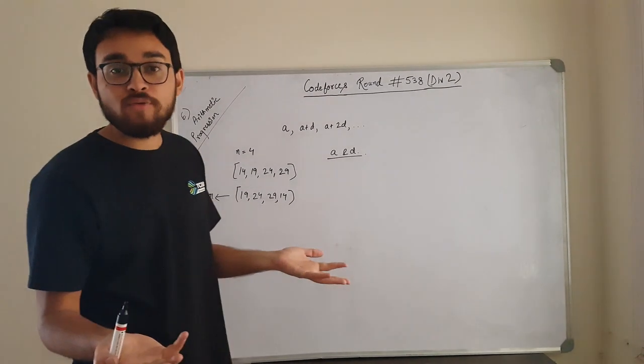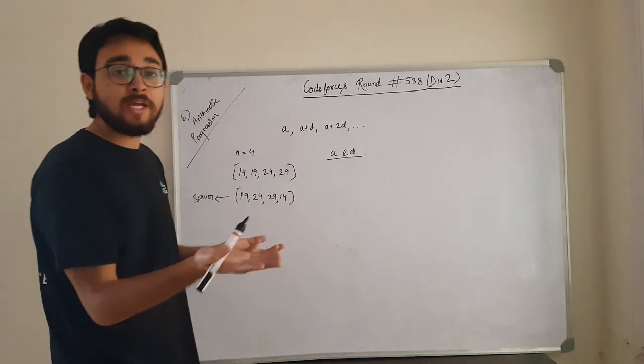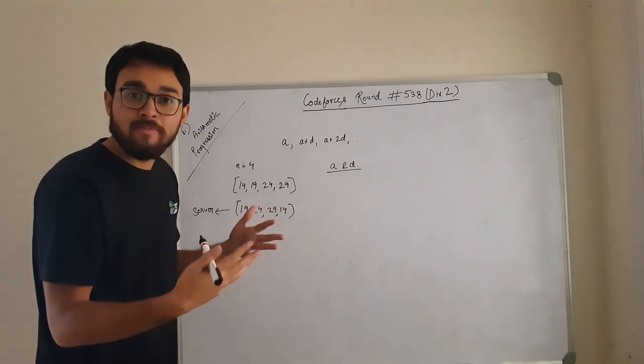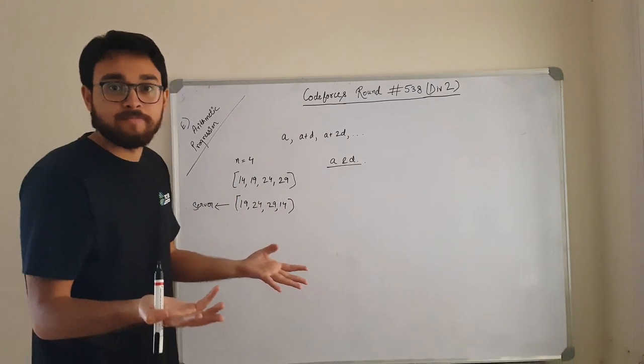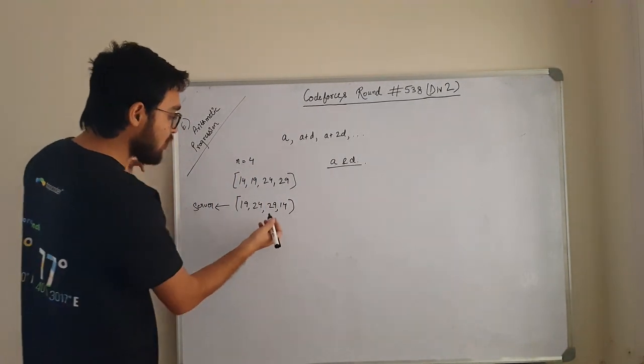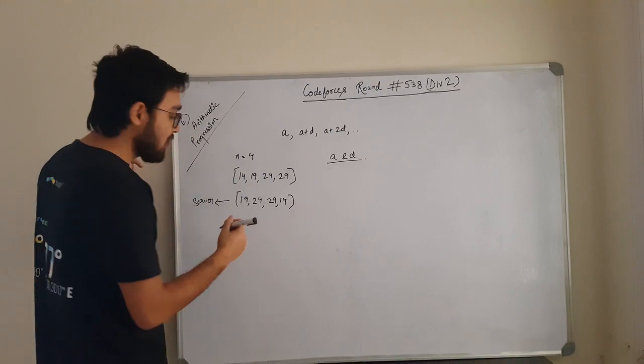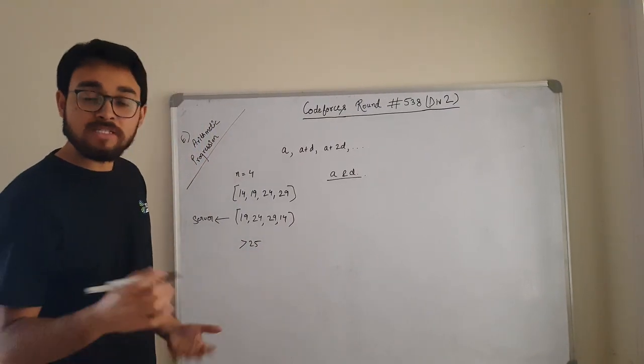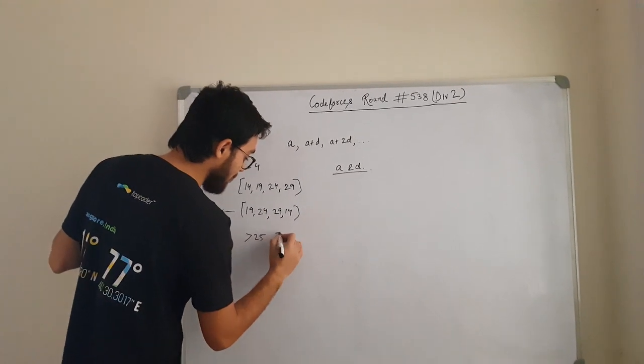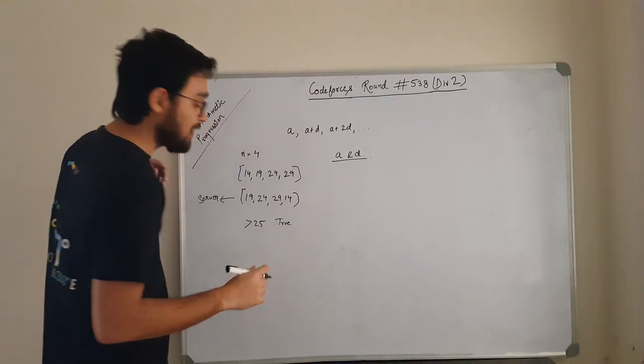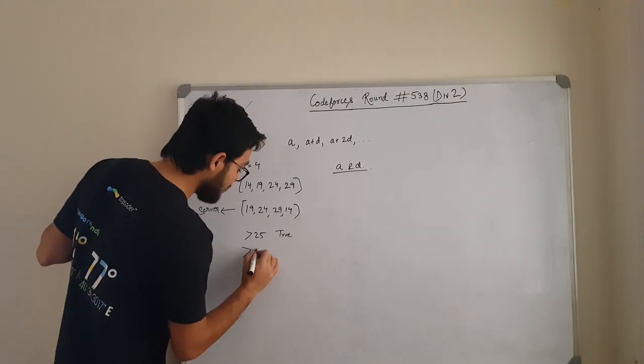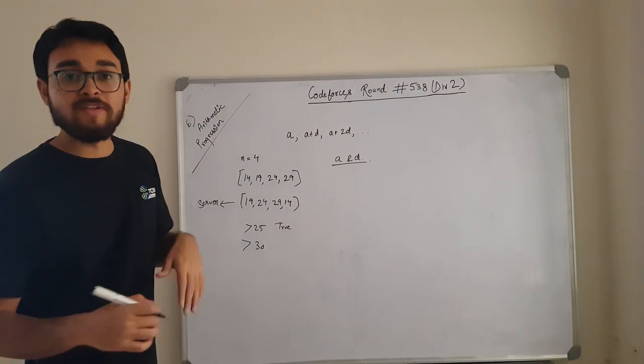What are the queries that you can make to the server? The first type of query that you can make is whether in this array there is an element greater than x present. Say you make a query like, is there a number greater than 25? The server will return true, that yes it is present. If you make a query like, is there any number greater than 30 present? It will say false.